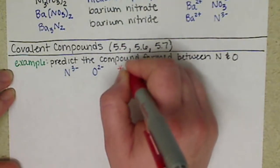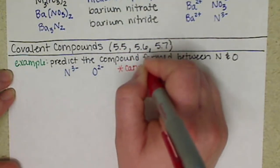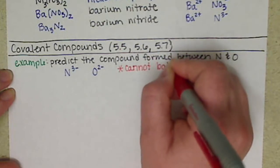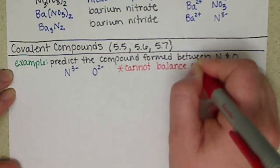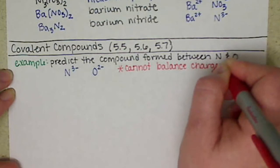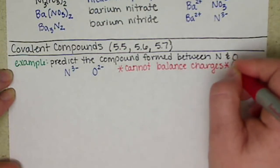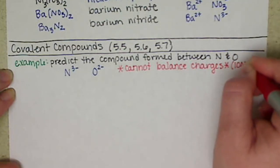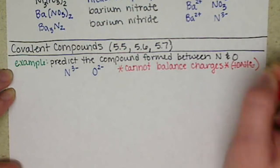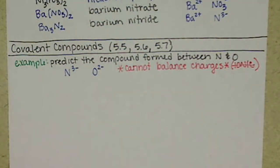So they don't have that opposite charges attract like they do with ionic. So we cannot balance our charges. In other words, it's not ionic, it's covalent. So what's going to happen is rather than having this opposites attract, the nitrogen and the oxygen are actually going to share electrons in order to form a compound.